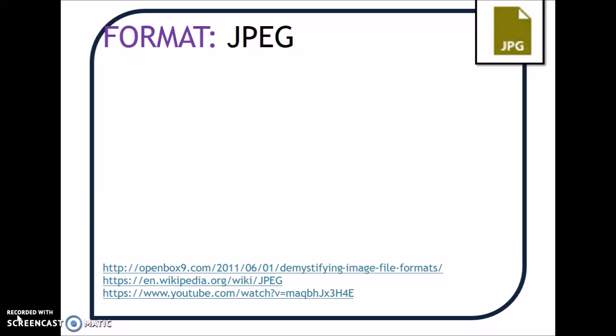The first one is a JPEG. I've included the sources at the bottom of each slide, although there are plenty of other sources to look at. A JPEG file is a lossy file format. It's seen as being a low quality file format by some people, because when it's saved it is compressed. That means that anything useless, according to the program you're using, is gotten rid of. So it can lead to some problems when you print.